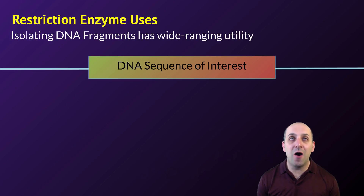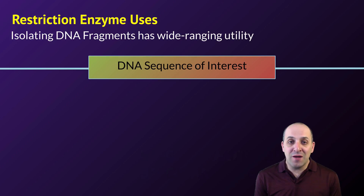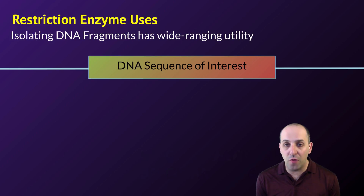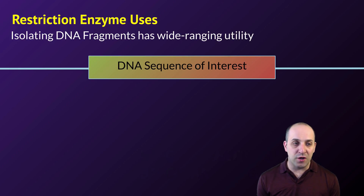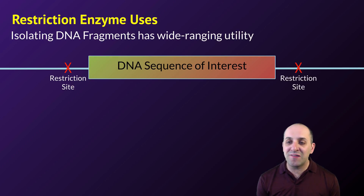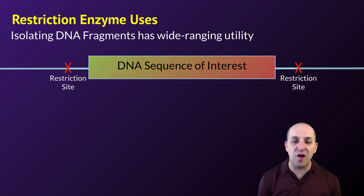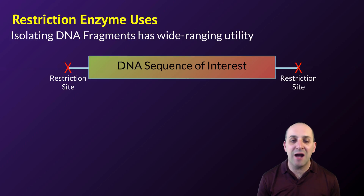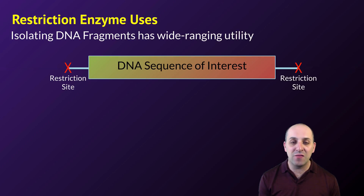Restriction enzymes have a ton of uses in genetic engineering. In order to manipulate DNA sequences, you frequently have to isolate those sequences from a bunch of other DNA. As shown in this image, if we know there's a restriction site on both sides of a sequence of interest, we can treat the DNA with the restriction enzyme and cut the sequence of interest away from the rest of the genome. Once we've isolated the sequence, we can do what we want with it.